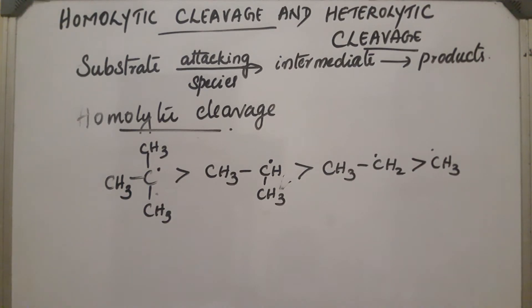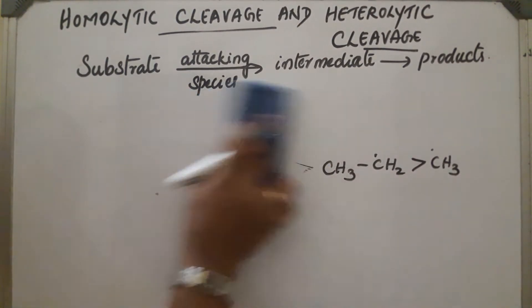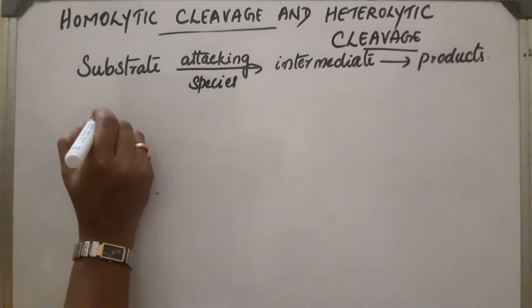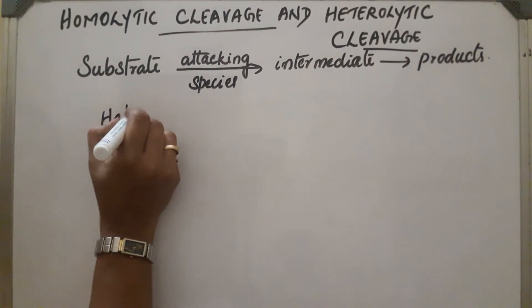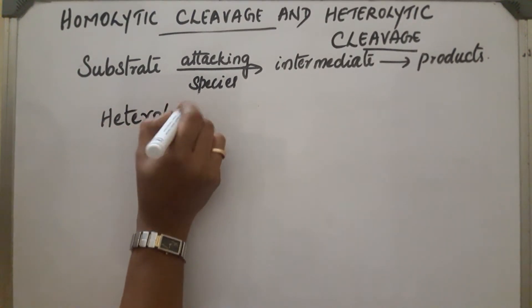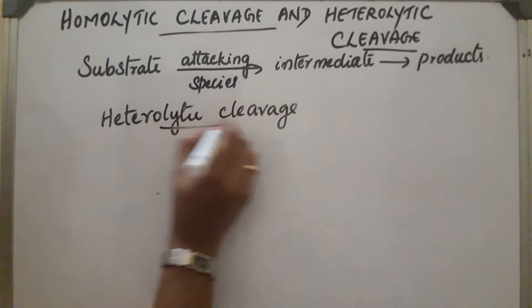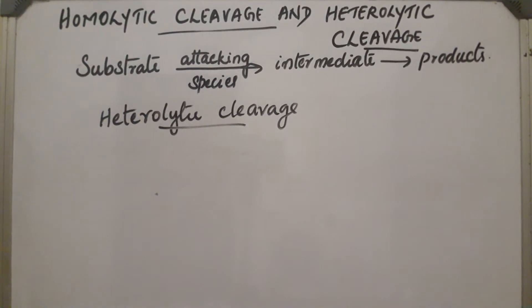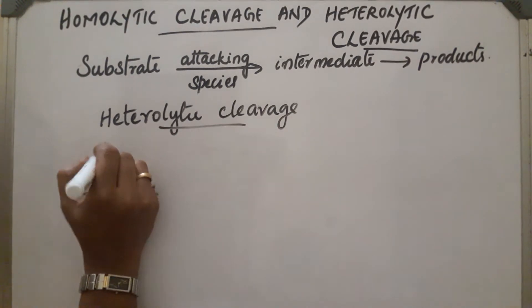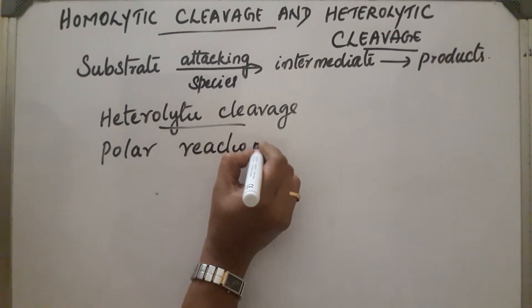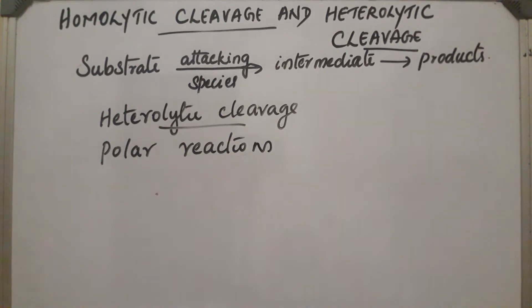The next type is heterolytic cleavage. In this case, different intermediates are formed and the intermediates obtained are ions — they may be positive or negative. Since ions are obtained, these reactions are also called polar reactions.